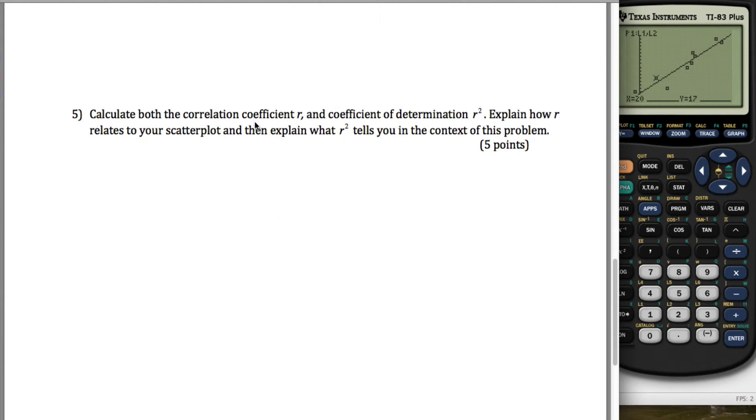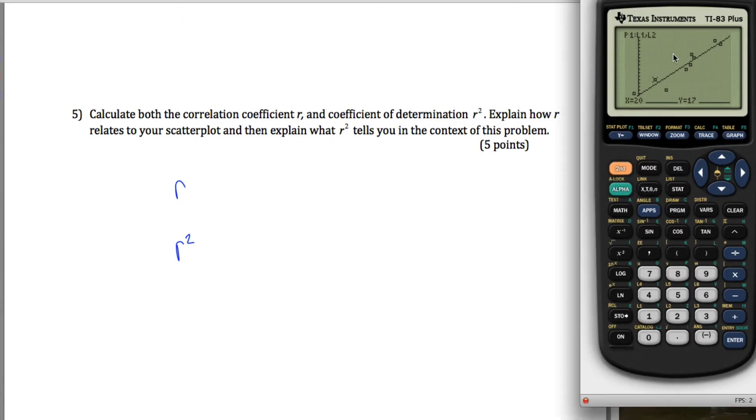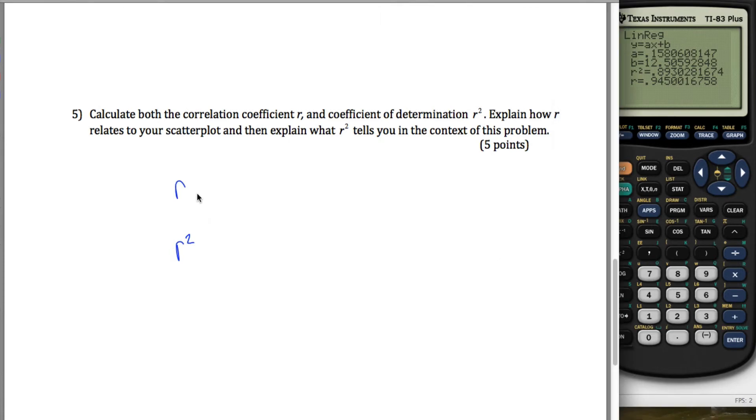Number 5, calculate both the correlation coefficient, which is r, and the coefficient of determination, which is r squared, and explain and talk about them a little bit. Well, it turns out I've already done that. Those were in the output of my linear regression. R is equal to 0.945, and r squared is equal to 0.893.